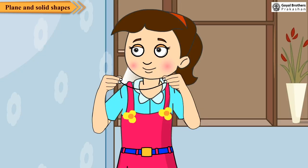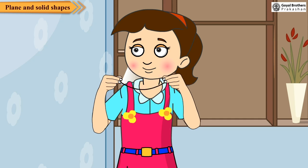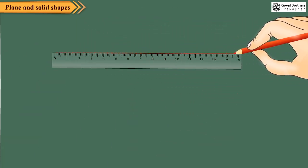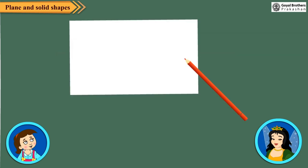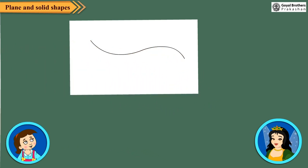Take a small piece of rope or thread and hold its two ends. If you hold it tightly, you will get a straight line. If you hold the string loose, you get a curved line. You can draw a straight line with the help of a scale. Scale or other similar objects are used to draw only straight lines. To draw curved lines, we need a pencil and paper only. If we move the tip of a pencil over a sheet of paper freely, we get a curved line.